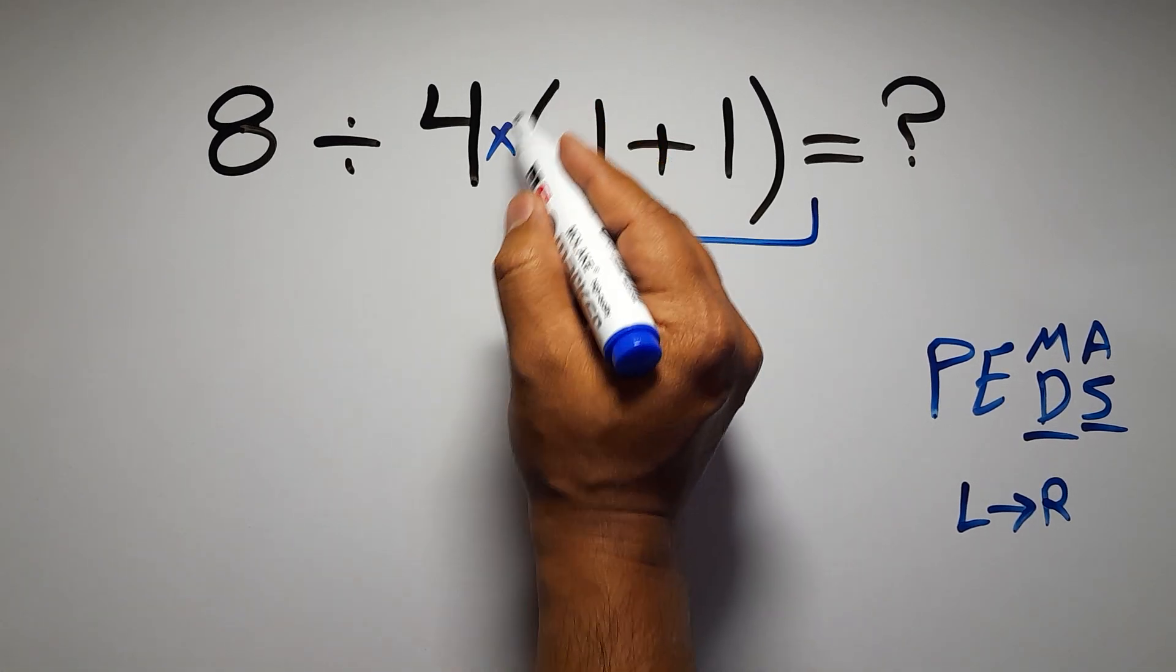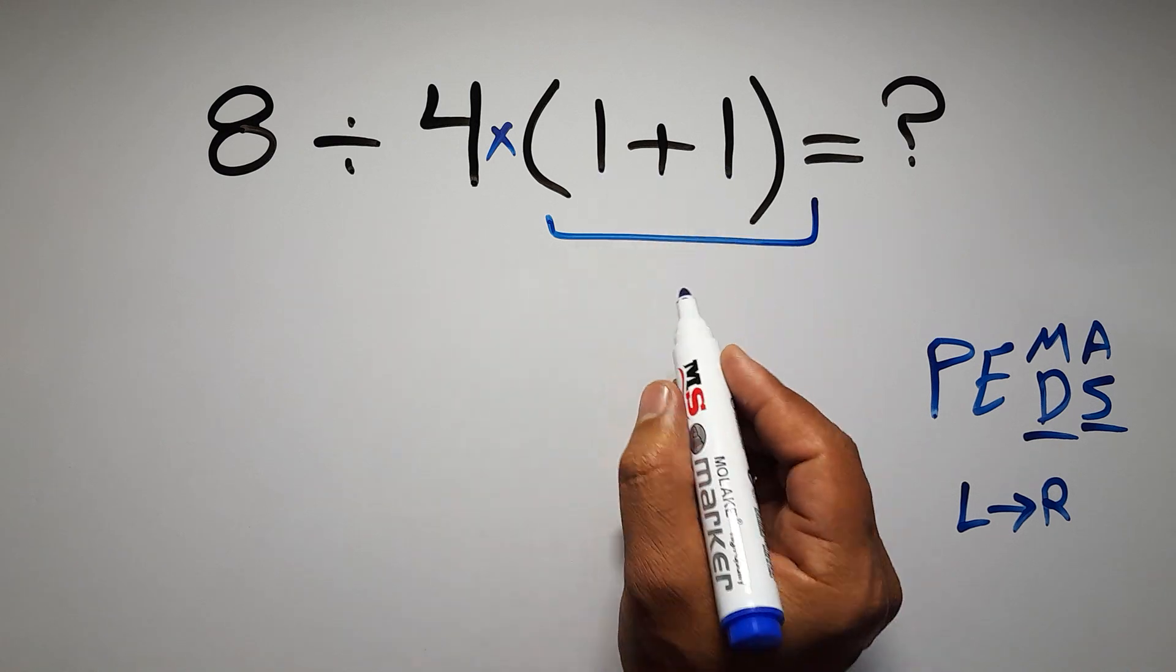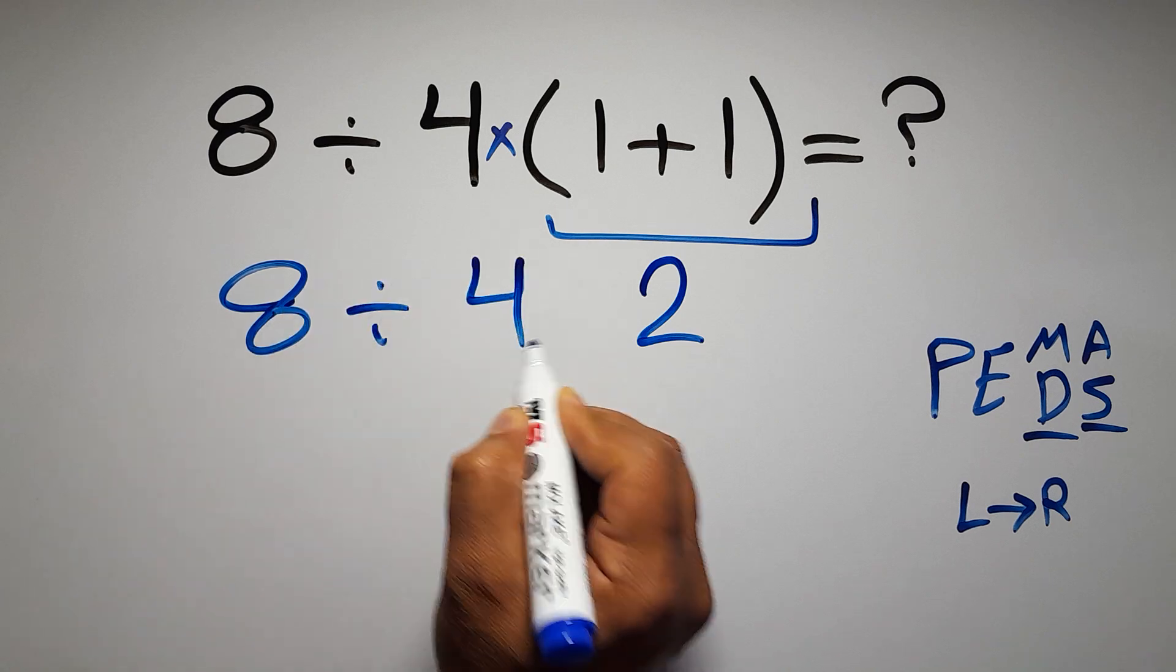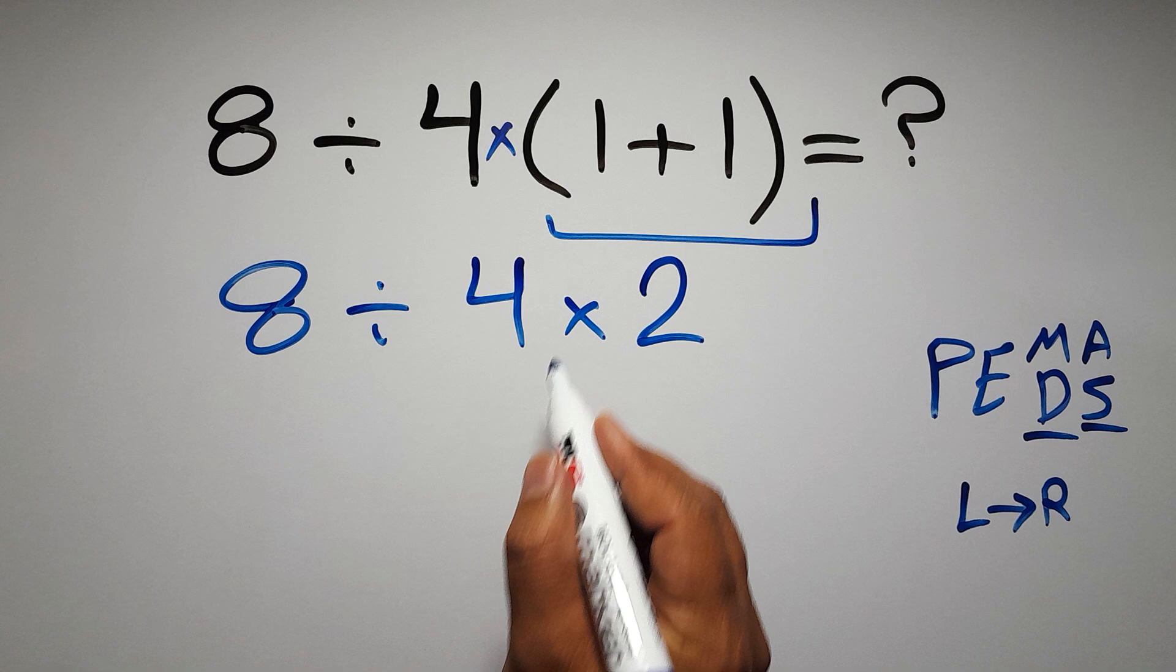So first, this parenthesis. Inside this parenthesis, we have 1 plus 1, which equals 2. So 8 divided by 4 times 2. Now we have one division and one multiplication.